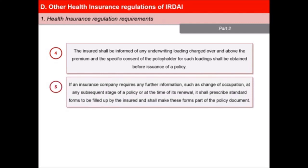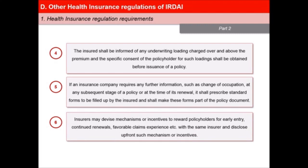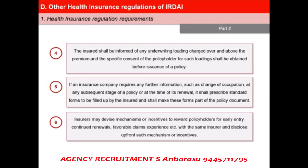Fifth, if an insurance company requires any further information such as change of occupation at any subsequent stage of a policy or at the time of its renewal, it shall prescribe standard forms to be filled up by the insured and shall make these forms a part of the policy document. And sixth, insurers may devise mechanisms or incentives to reward policyholders for early entry, continued renewals, favourable claims experience, etc., and then disclose such mechanism or incentives upfront.